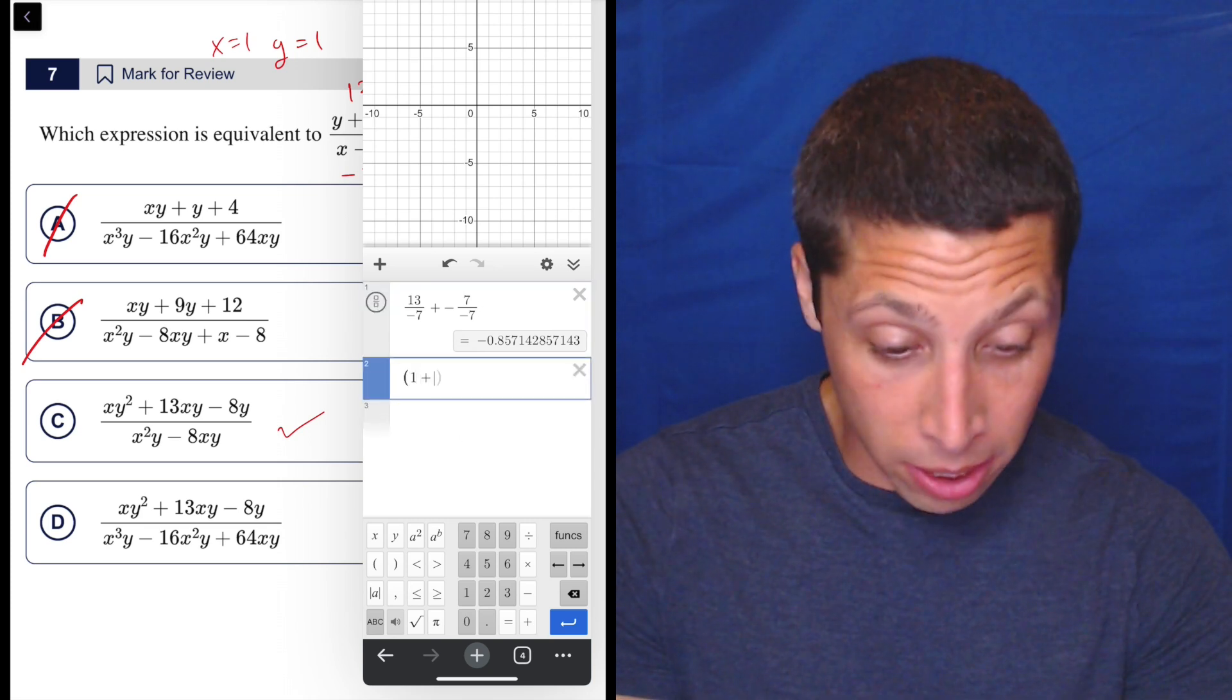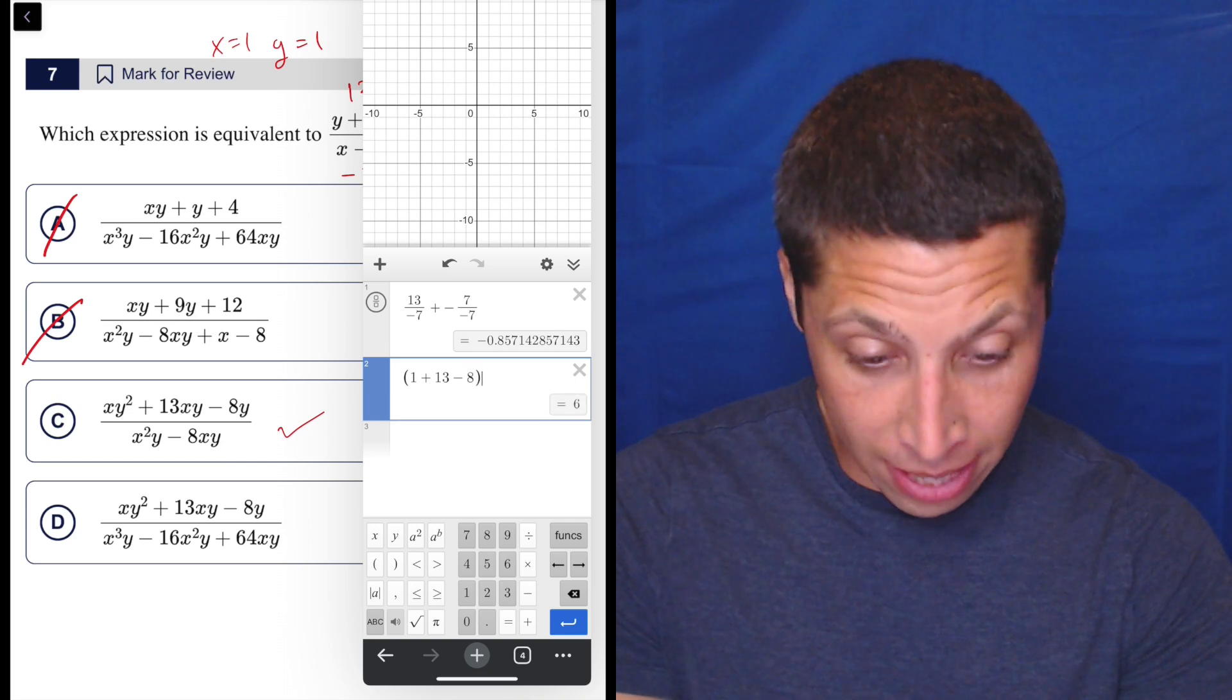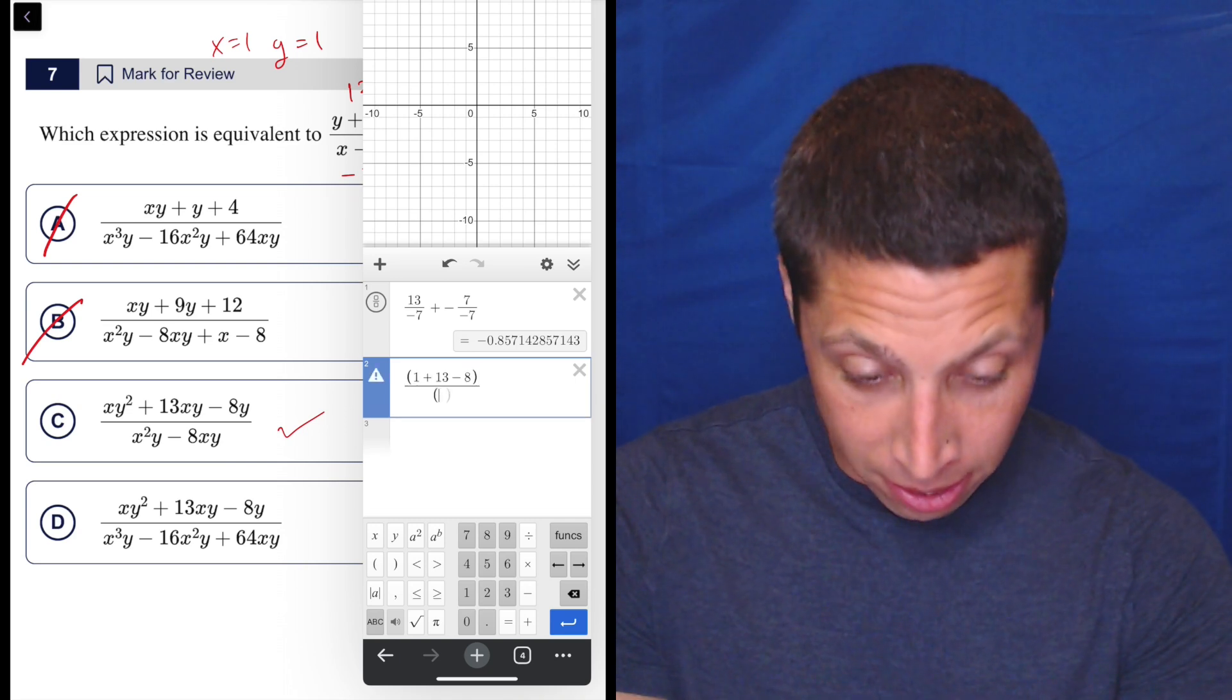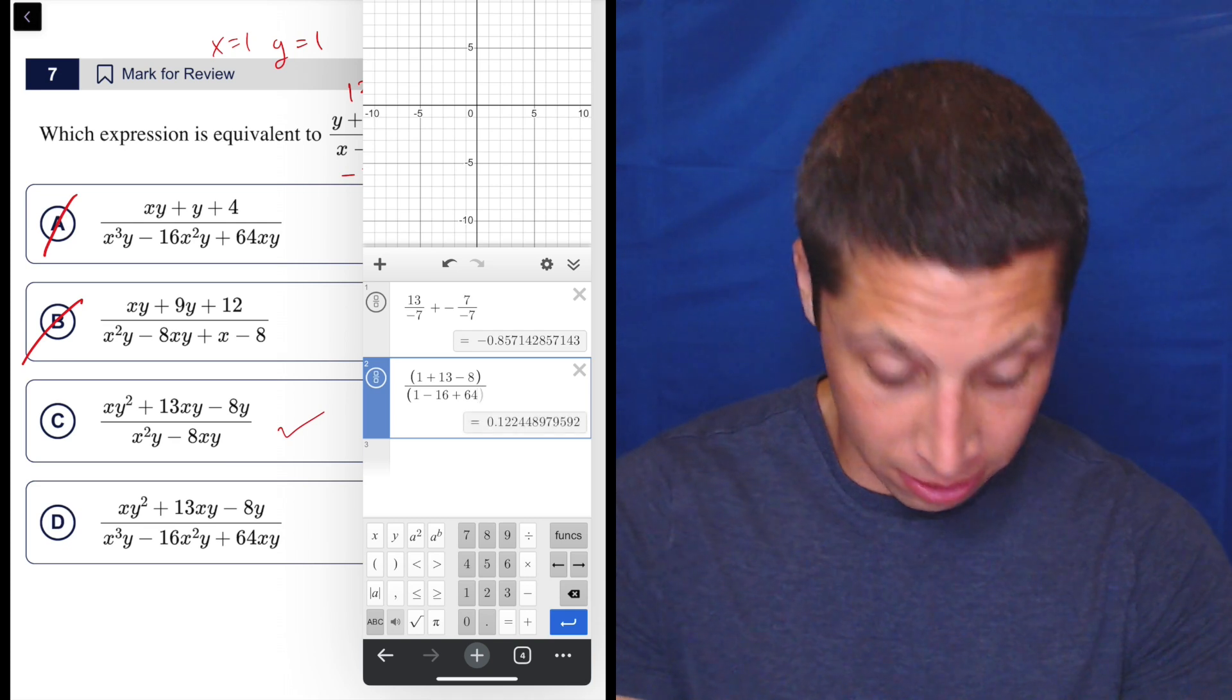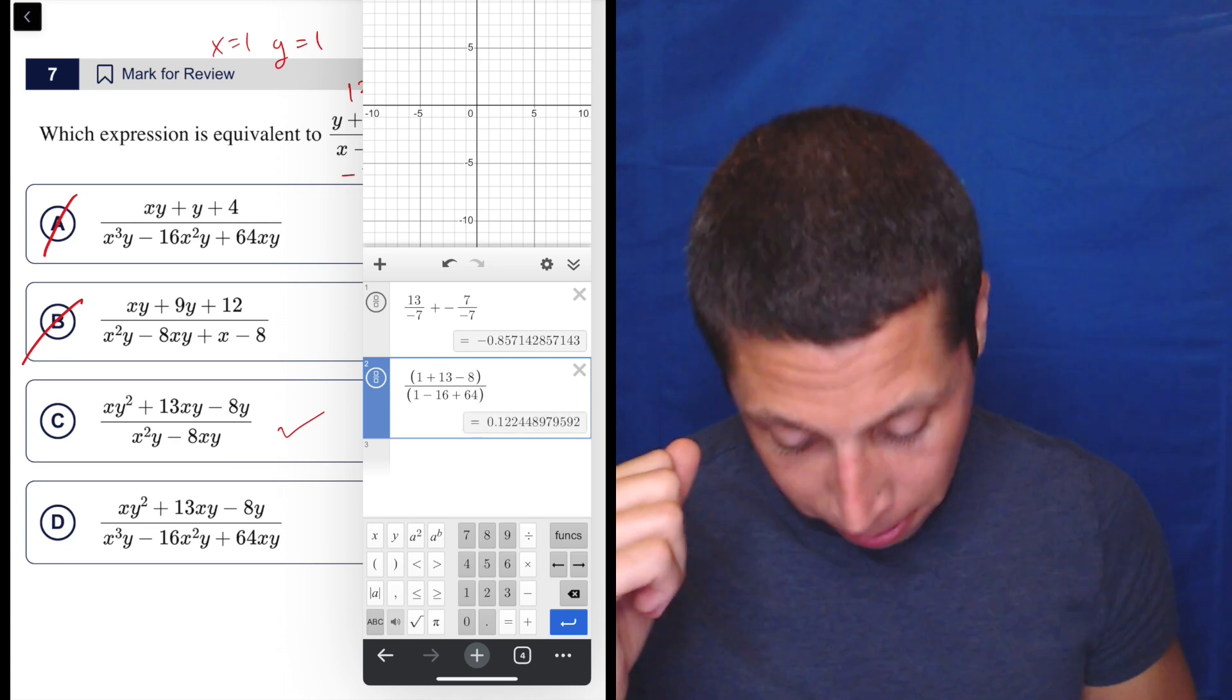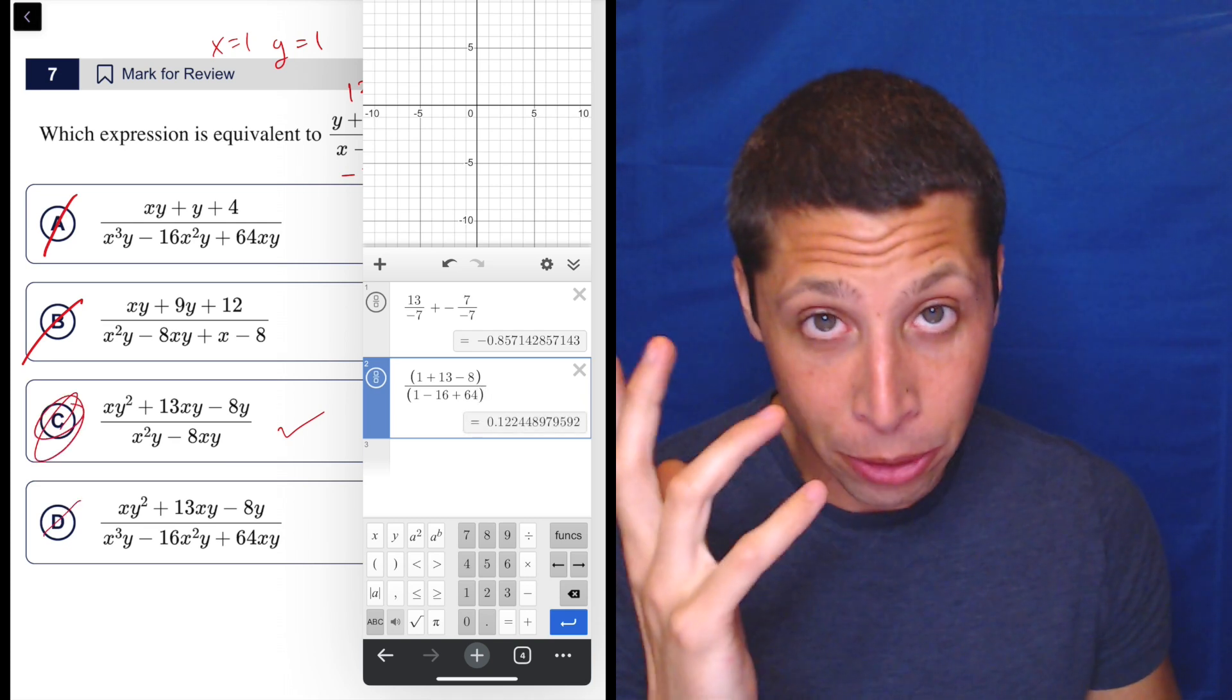So let's get rid of it and let's go to D here. So same process, one plus 13 minus eight divided by one minus 16 plus 64. Different messy number. That's it. That's all I would do.